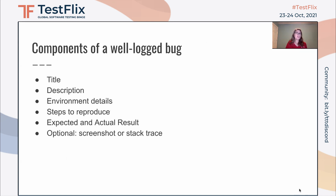So let's take a look at the components of a well-logged bug. First of all, it has a good title, it has an accurate description, it has environment details, it has good steps to reproduce, it includes an expected and actual result, and it may include a screenshot or a stack trace, if those are helpful.